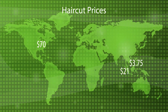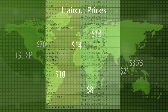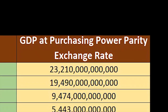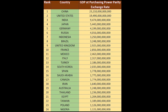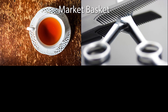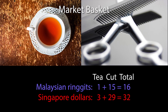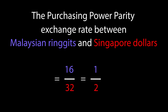Differences in prices across countries make it important to adjust figures that are being compared, such as incomes and gross domestic products, to reflect the differing cost of living in different countries. We can do that by calculating the purchasing power parity exchange rate between the countries. We can find the purchasing power parity exchange rate between ringgits and Singapore dollars by dividing the price of a market basket of goods and services in ringgits by the price of the same basket in dollars. If our basket is a cup of tea and a haircut, the price is 16 ringgits or 32 Singapore dollars, so the purchasing power parity exchange rate is one half ringgit per Singapore dollar.